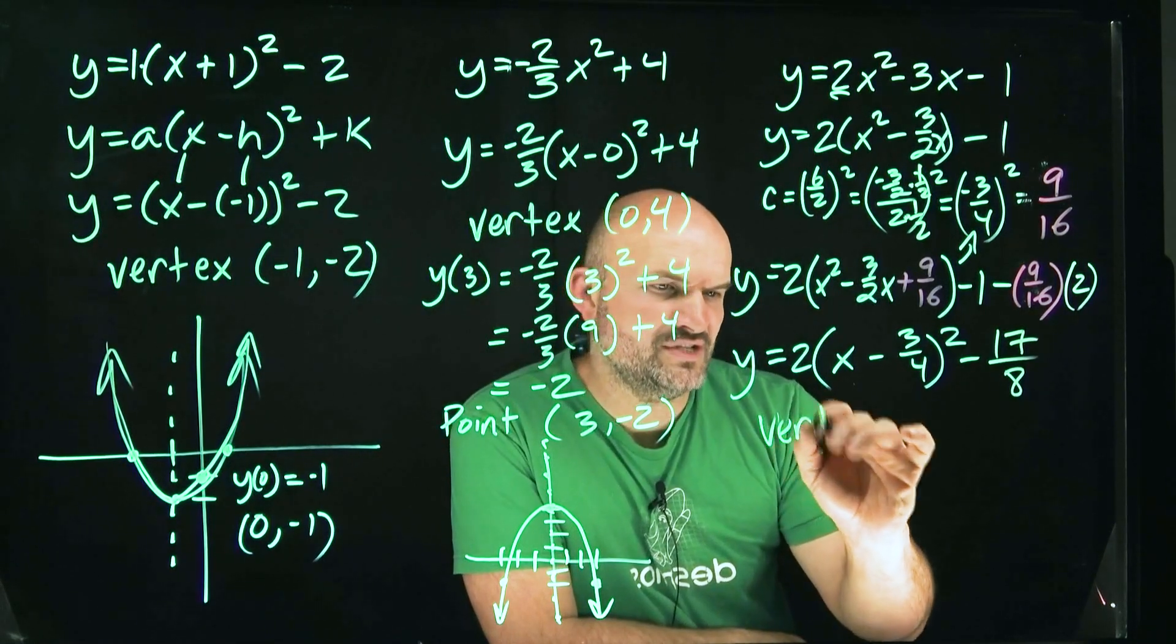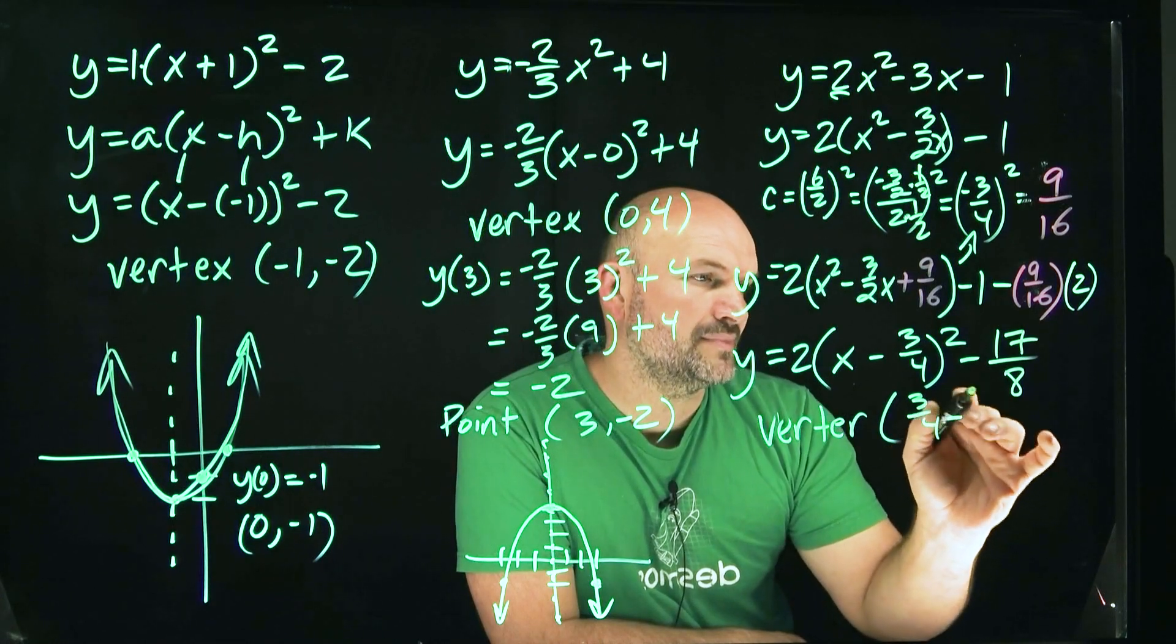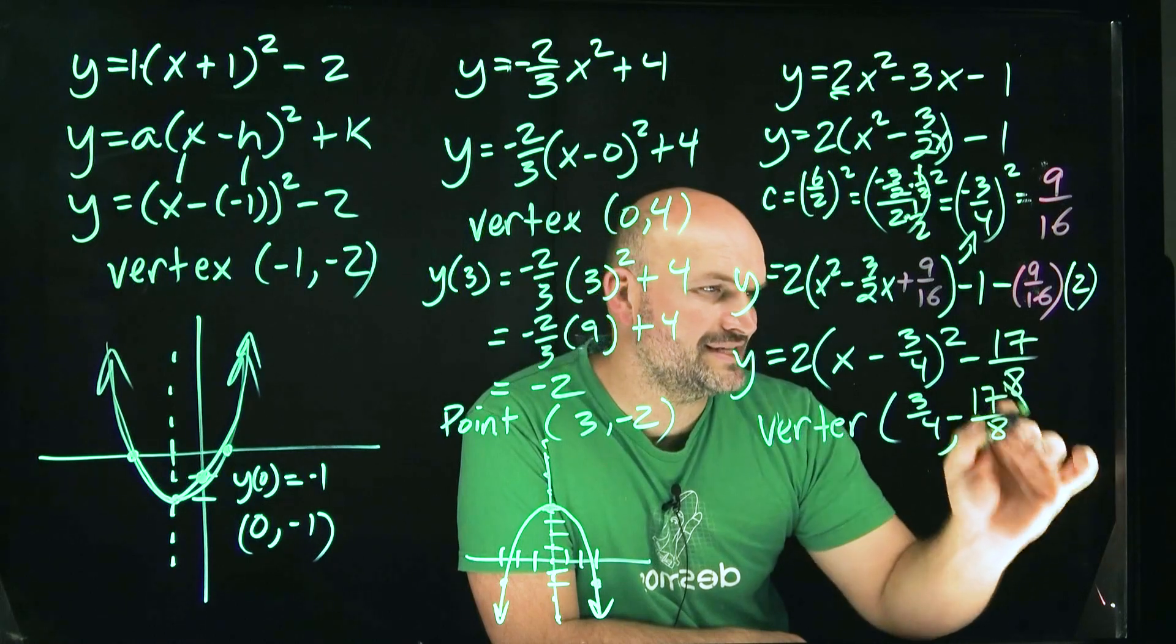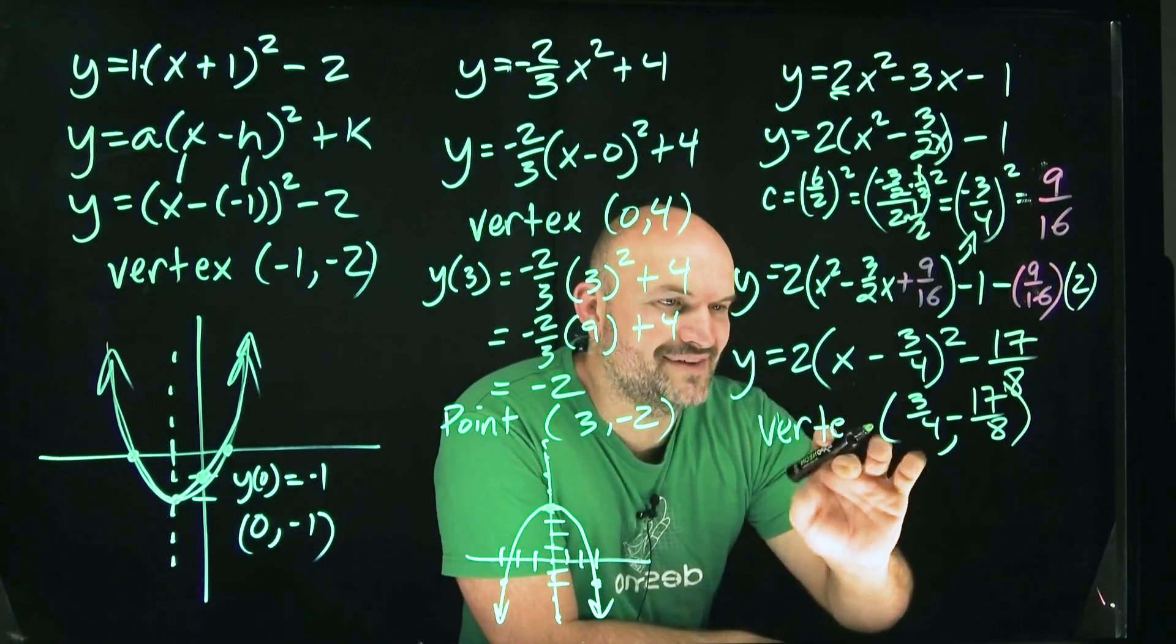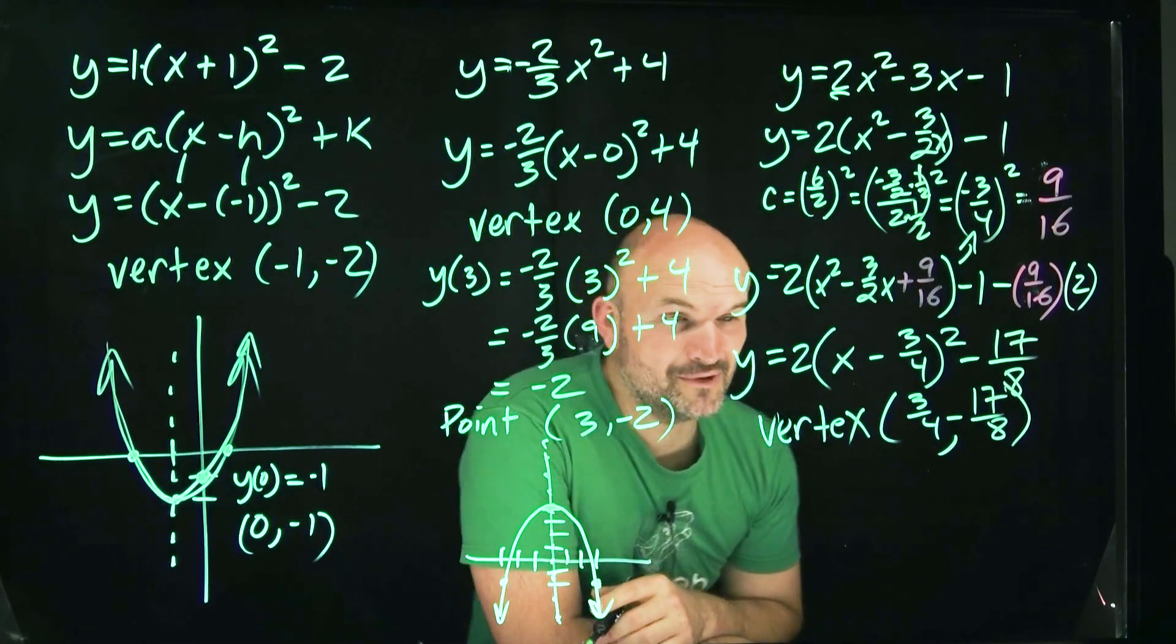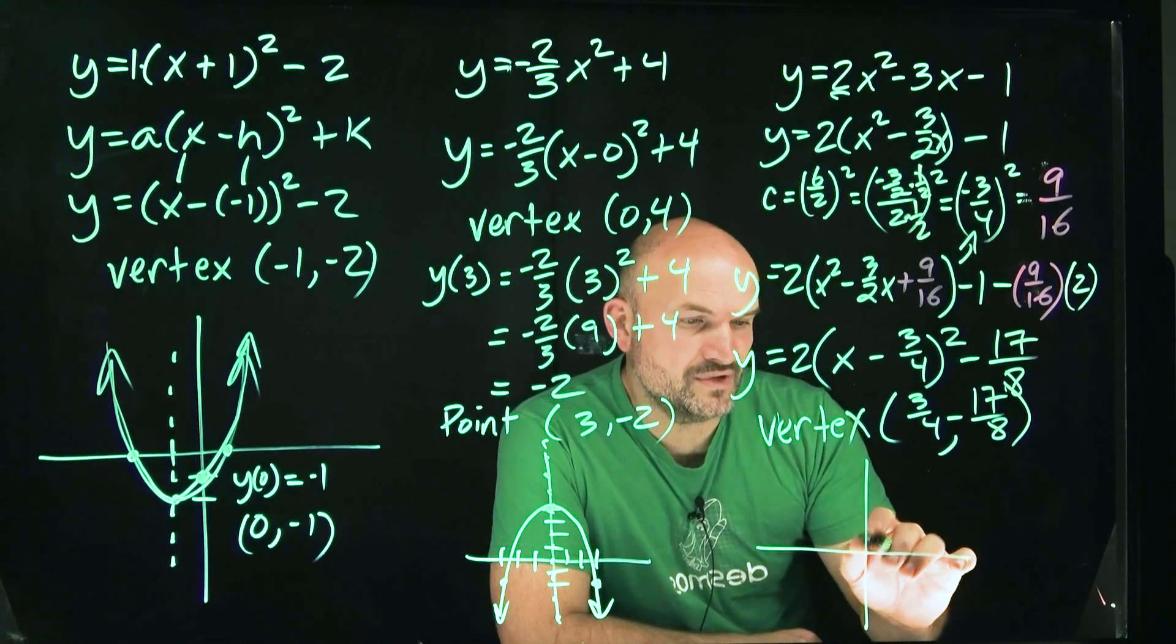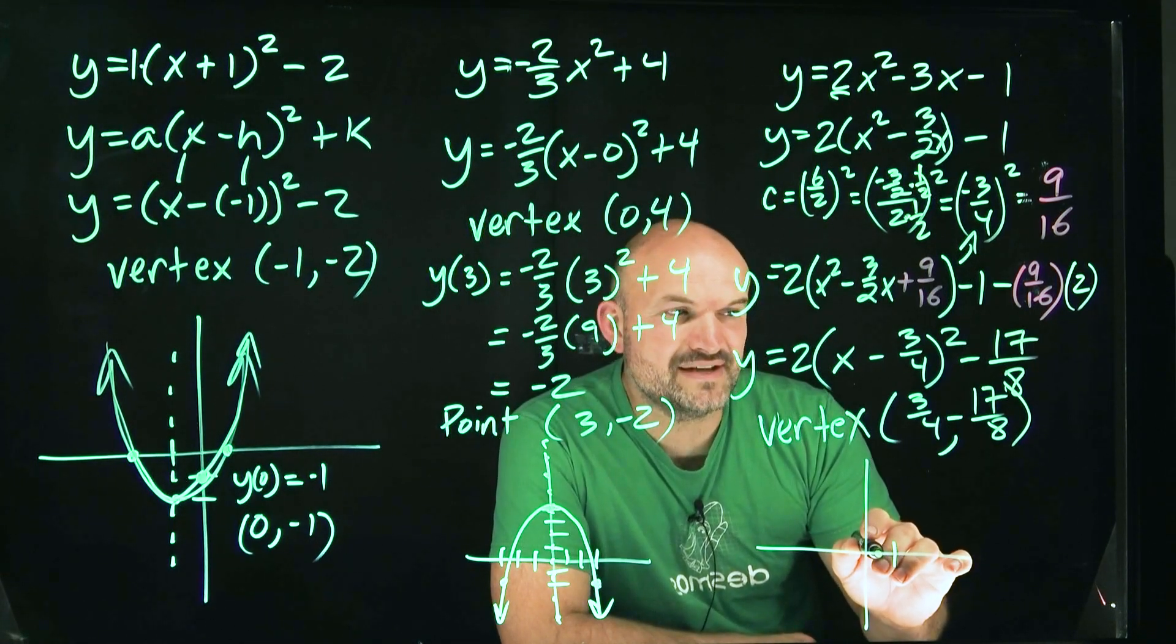So therefore my vertex is going to be positive 3 fourths, negative 17 over 8. And I do not want to go ahead and find another point. That's not going to be very cool. But I can go ahead and estimate. So let's see. We have 3 fourths. So let's say that's 1. So 3 fourths would be here. And then negative 17 over 8. Think about it this way, guys. That's going to be like 8 times 2 is 16. So that would be 2 and just a little bit more than 2.